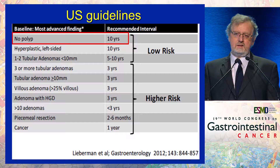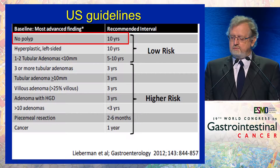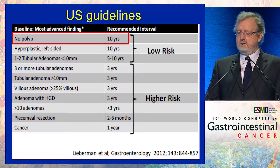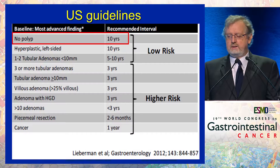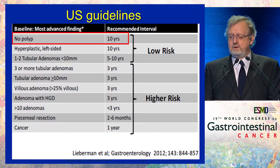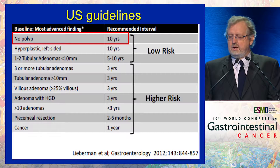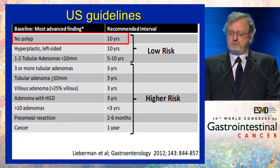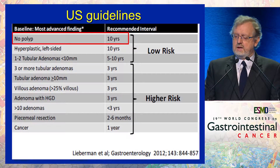Different recommendations are available depending on where you live. In the United States, guidelines from 2012 define low-risk patients as those with no polyps, hyperplastic polyps, or one to two small adenomas smaller than 10 mm — with follow-up at 10 years or five to ten years. High-risk patients — those with three or more adenomas, larger adenomas, villous components, high-grade dysplasia, or more than 10 adenomas — should have a repeat colonoscopy within three years or less.